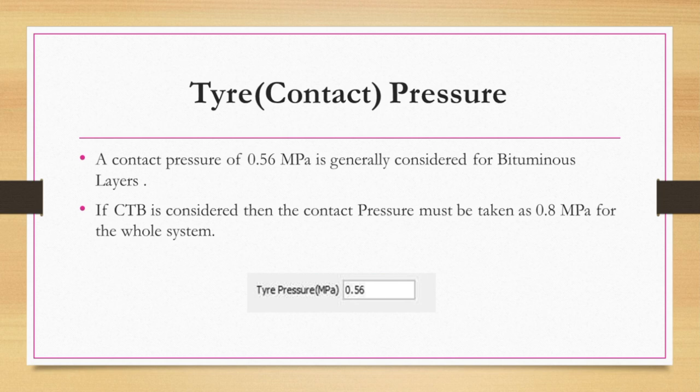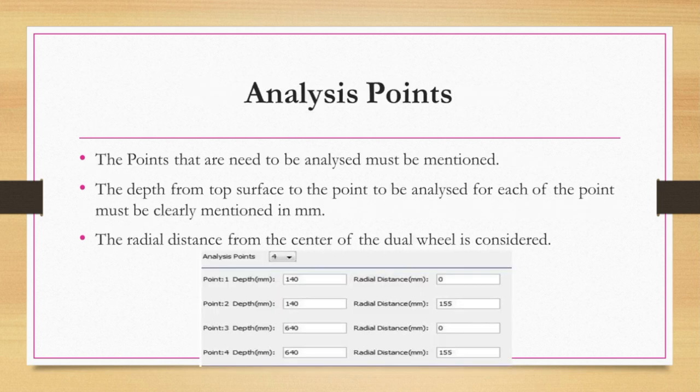Contact pressure is generally taken as 0.56 MPa for the analysis. This value is used since the performance models for fatigue and rutting criterion equations were derived with respect to this 0.56 MPa contact pressure assumption. If tensile stresses and tensile strain need to be calculated in CTB layer, then a contact pressure of 0.8 MPa is given as input for the whole system.